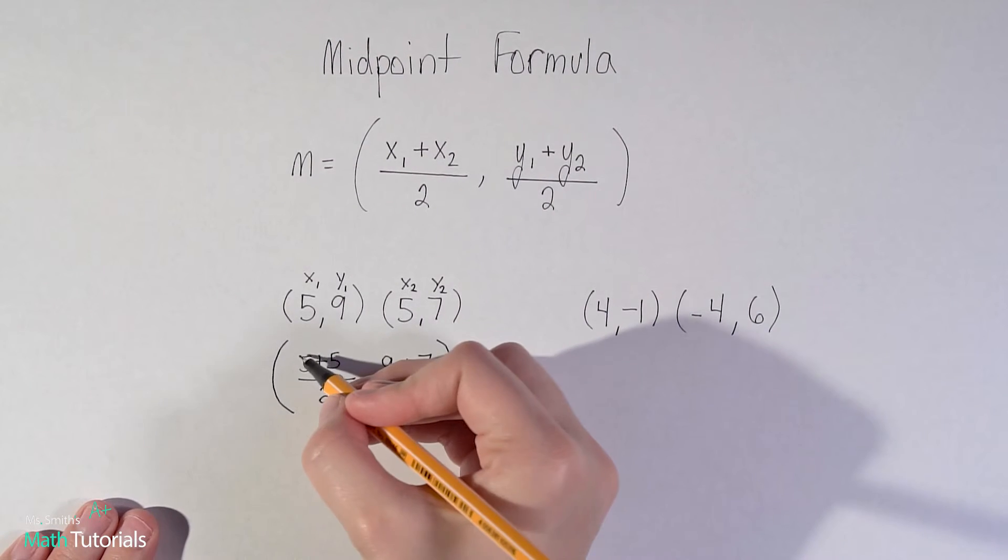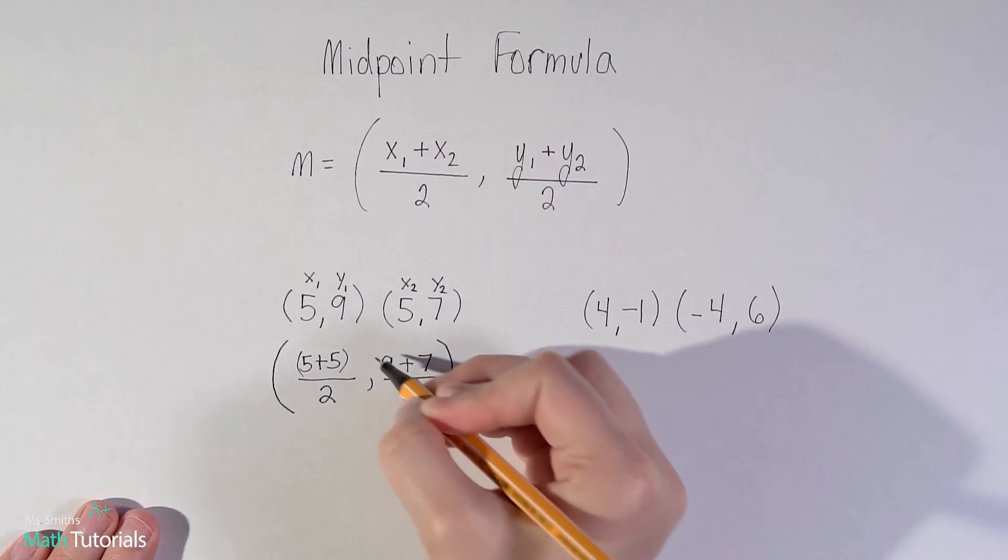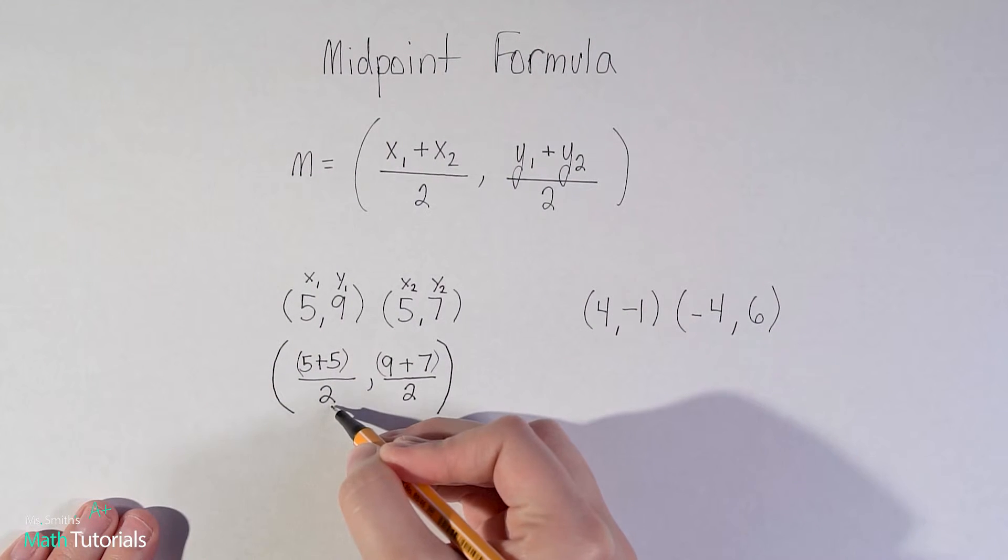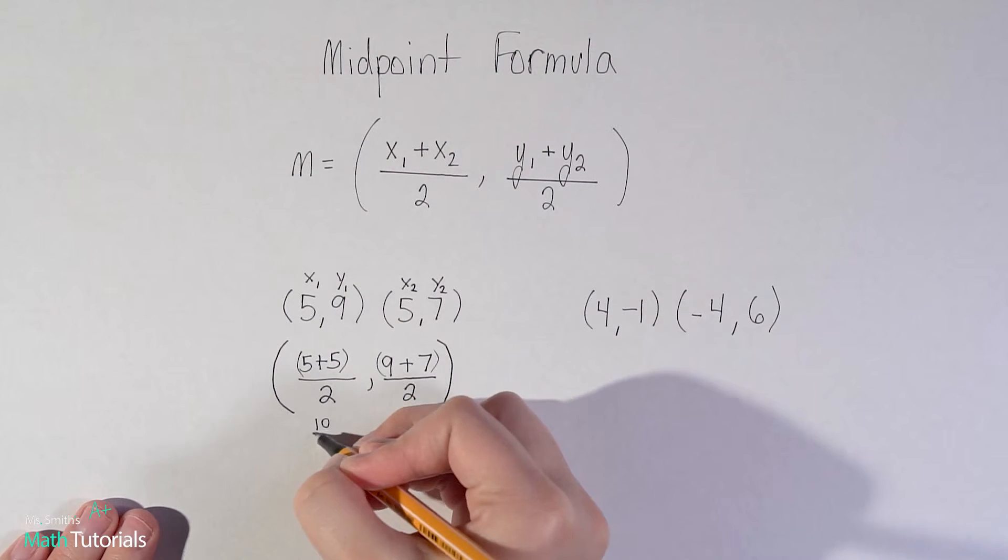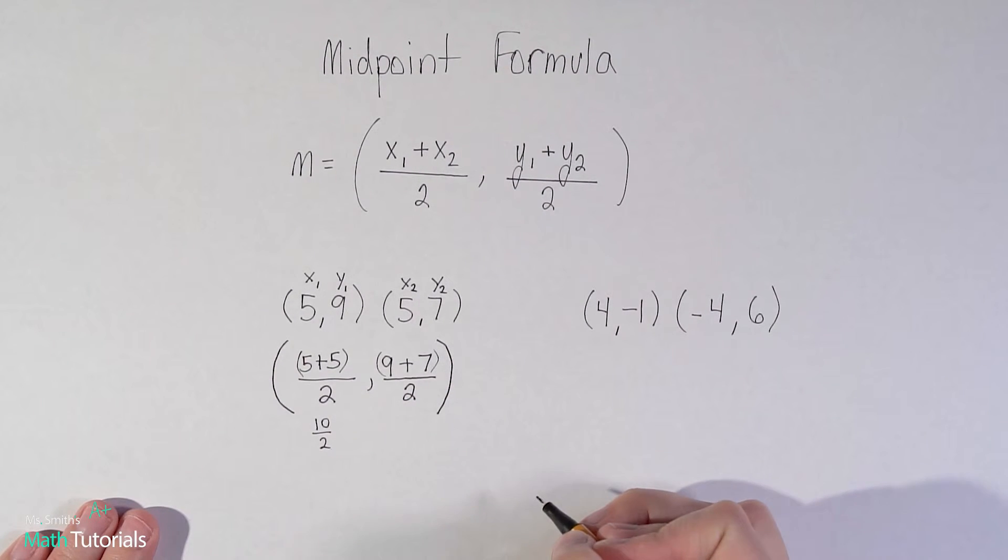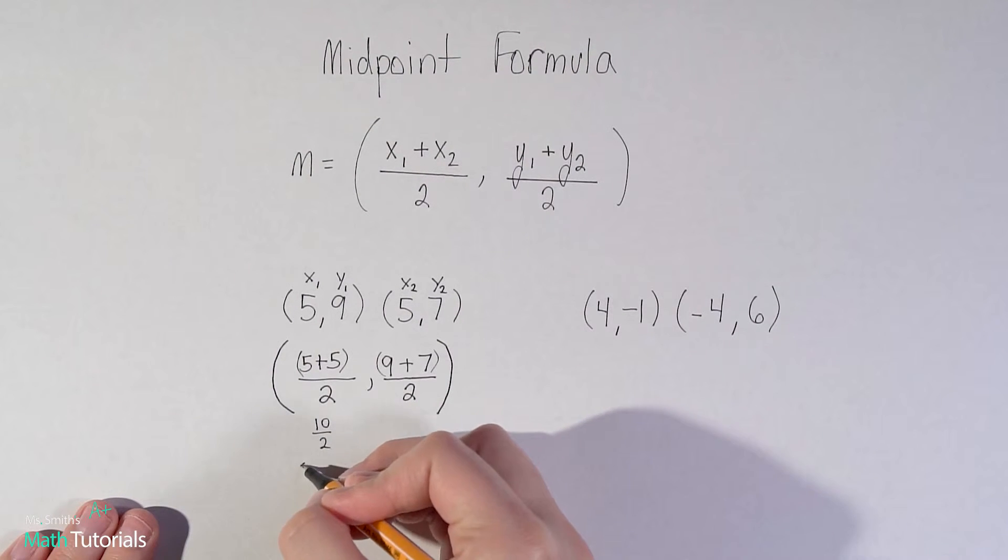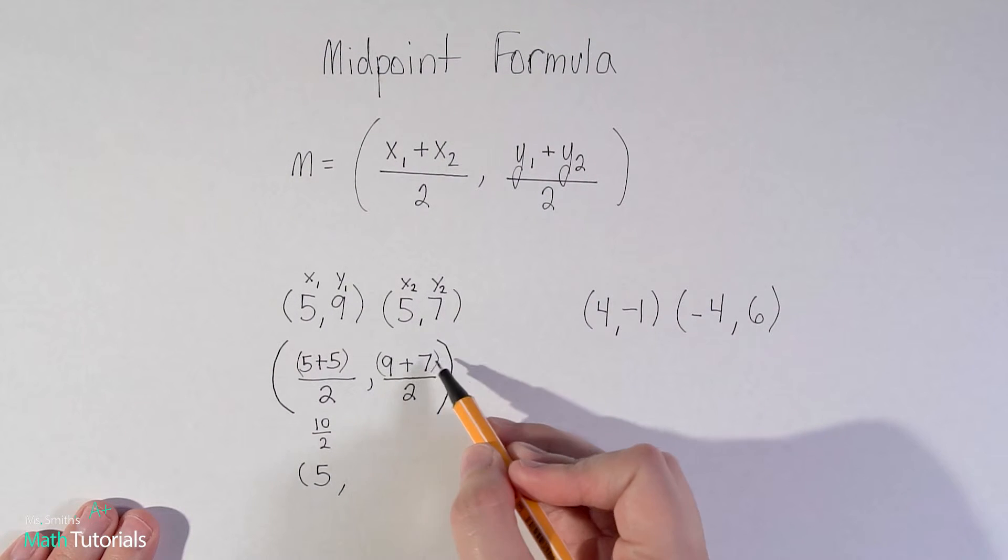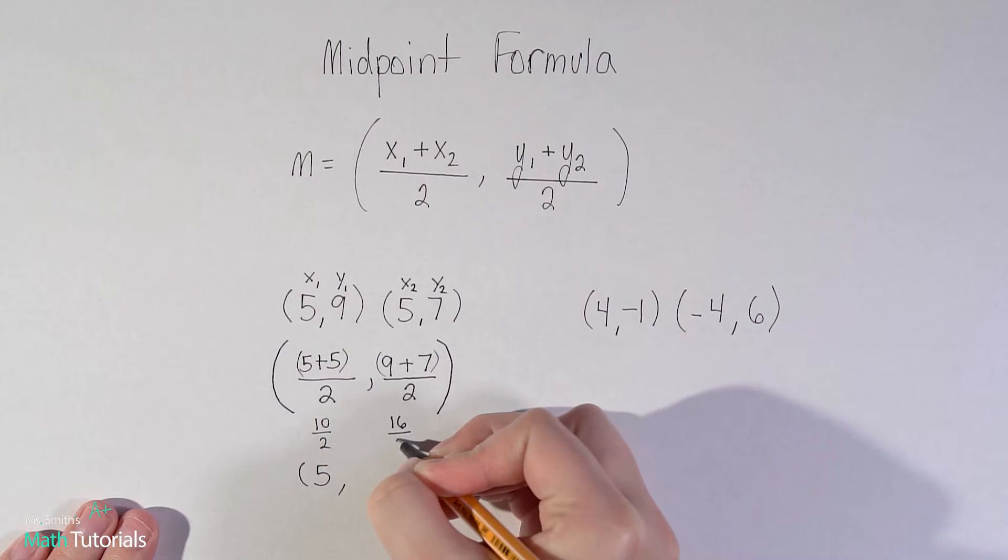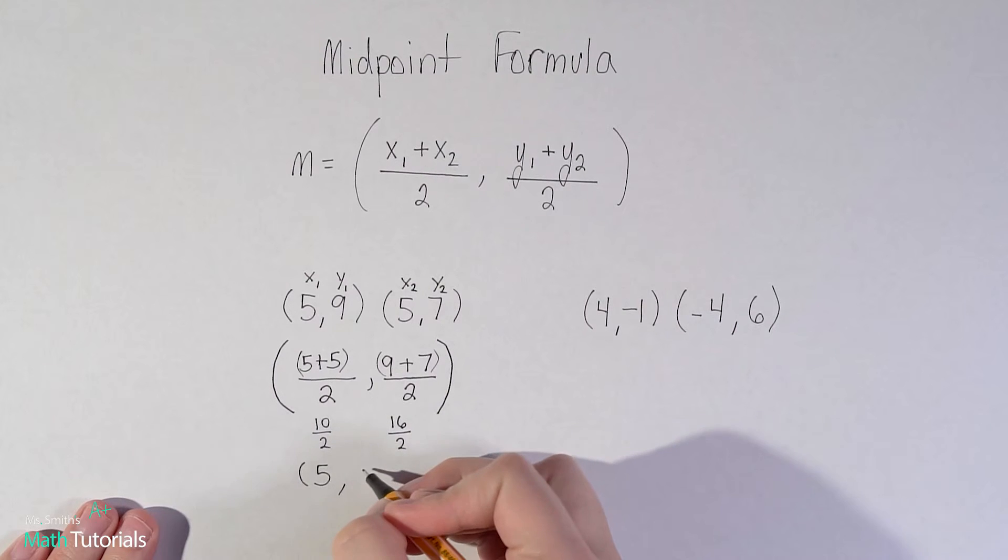Remember we simplify the top first and then we divide by 2. So what is 5 plus 5? Well that would be 10, and what is 10 divided by 2? That would be 5. So there's my x value, 5. I need to find my y value now. 9 plus 7 would be 16, and then 16 divided by 2 would be 8.